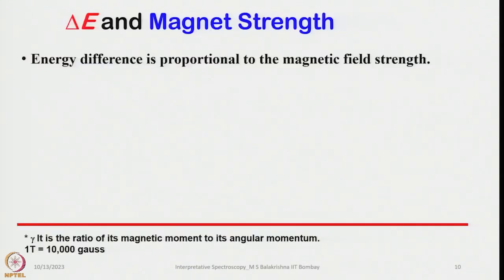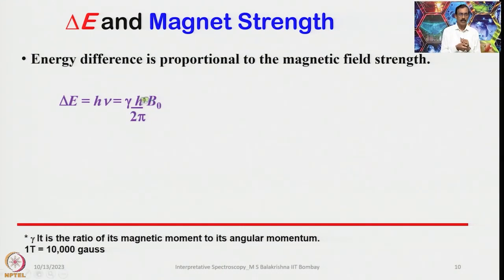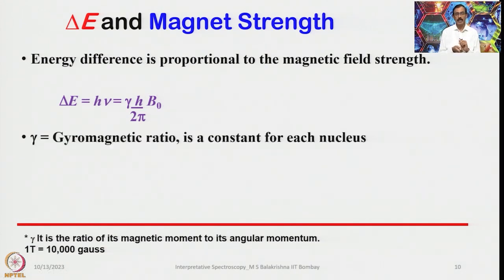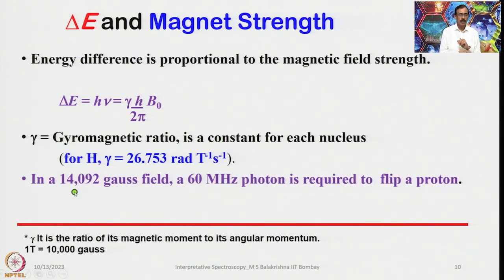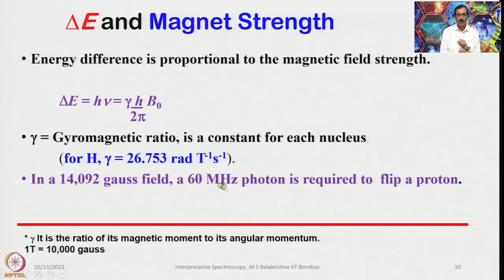The energy difference is proportional to the magnetic field strength. The key equation is ν = γh/(2π) × B₀, or simplified ν = γ/(2π) × B₀. For hydrogen, γ = 26.753 rad·T⁻¹·s⁻¹. In a 14,092 gauss field, a 60 MHz photon is required to flip a proton — meaning we apply a magnetic field perpendicular at 60 MHz. This is a low energy radio frequency we are using.